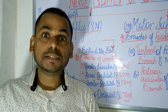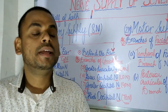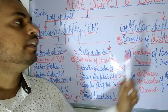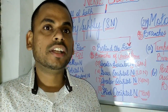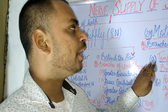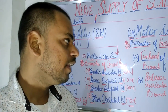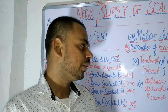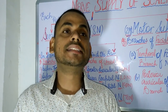Moving on to the motor supply — each half of the scalp is supplied by two motor nerves, both branches of the facial nerve. The first is the temporal branch of the facial nerve, and the second is the posterior auricular branch of the facial nerve.